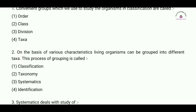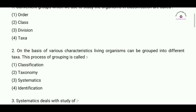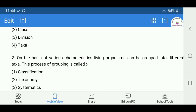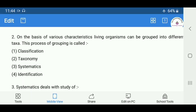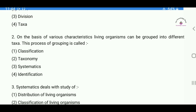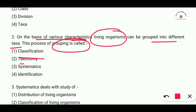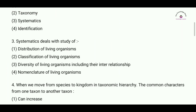Question number two: based on different characteristics, living organisms can be grouped into different taxa. The process of grouping is called — classification, taxonomy, systematics, or identification? The correct answer is option number one: classification. On the basis of various characteristics, living organisms can be grouped, and this process is called classification.